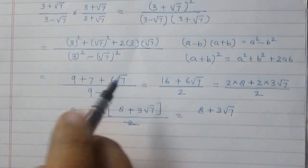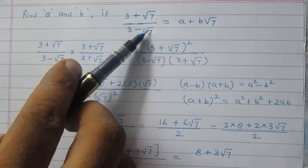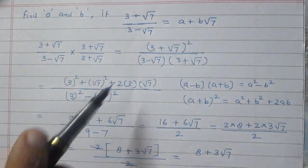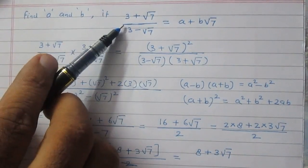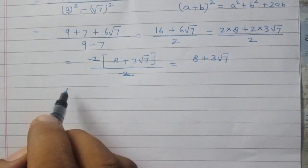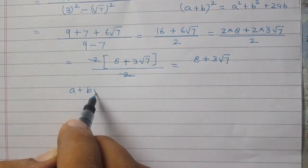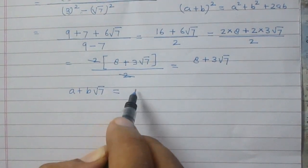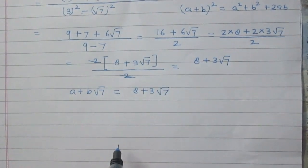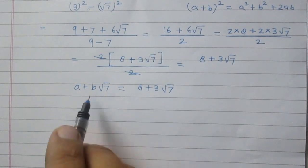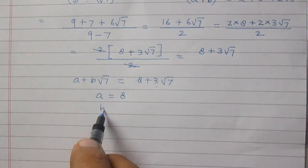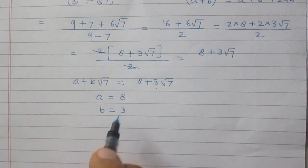We are given that the fraction equals a + b√7, and we have shown it equals 8 + 3√7. So comparing both sides, a + b√7 = 8 + 3√7, which means a = 8 and b = 3.